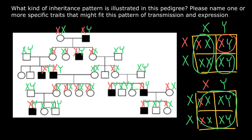By the way, in this family, girls can also be affected if they get a defective X chromosome from the father's side and a defective X chromosome from the mother's side. That means 50% of the girls in this family are also going to be affected with this genetic disorder — not only 50% of the males, but also 50% of the females — because both parents are heterozygous.